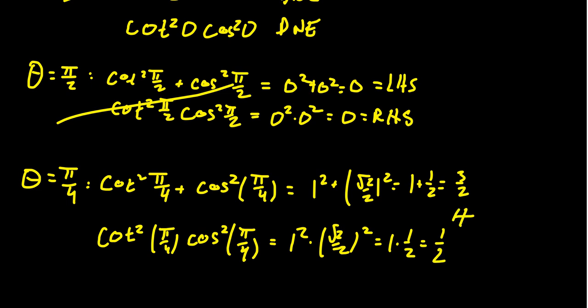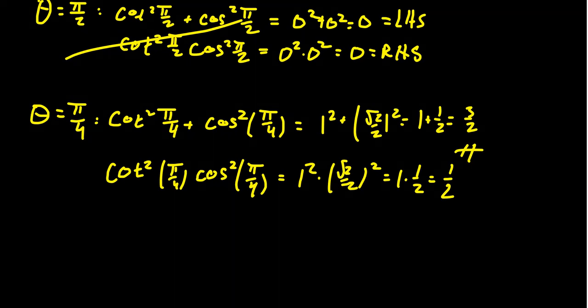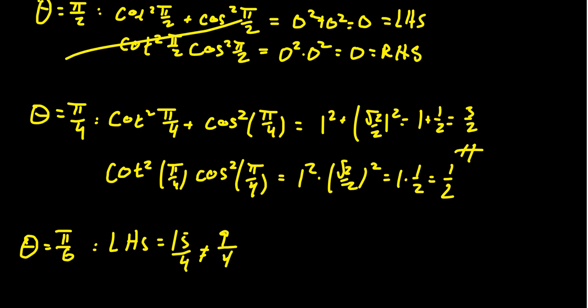This is evidence that they're not equal to each other. The left-hand side at pi/4 equals 3/2, while the right-hand side at pi/4 equals 1/2 — so they aren't equal. And pi/4 is not the exception; we could have used pi/6 as well, where the left-hand side gives 15/4 and the right-hand side gives 9/4, which are also not equal.